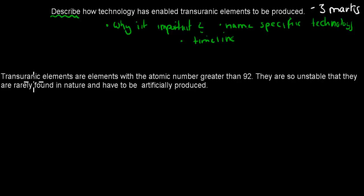So first part is transuranic elements are elements with atomic number greater than 92. They are so unstable that they are rarely found in nature, and have to be artificially produced. So here that was the whole, why is it important? Like why do we need to have technology to make transuranic elements? Because transuranic elements are so unstable that they are rarely found in nature. And the only way we can make them, or have them, is if we can make them ourselves, if they are artificially produced. And we say artificially produced, that means through technology itself.